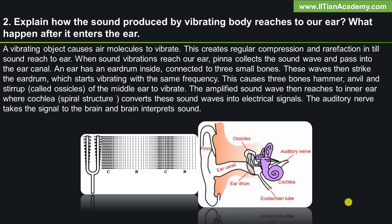Let us see how sound produced by a vibrating body reaches our ear and what happens after it enters the ear. A vibrating object causes air molecules to vibrate. This creates regular compression and rarefaction in the medium, and this reaches our ear as sound.